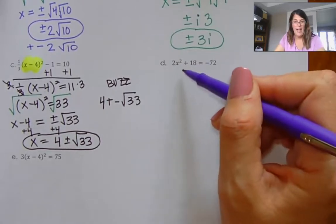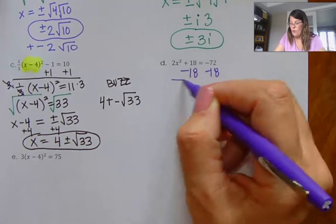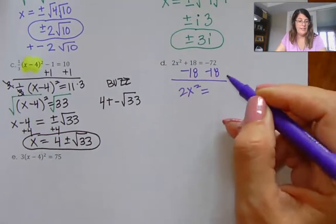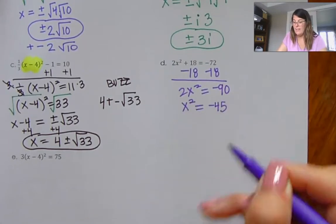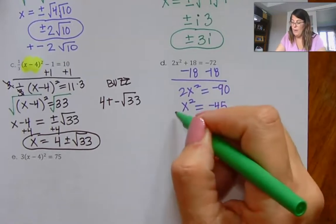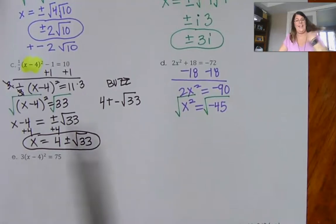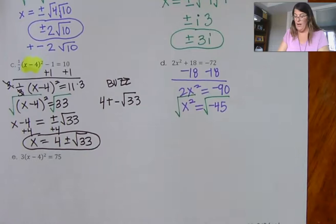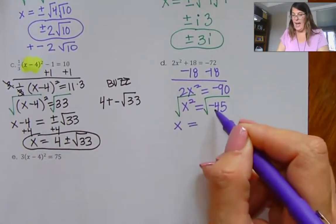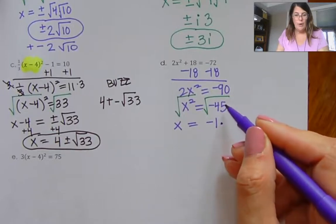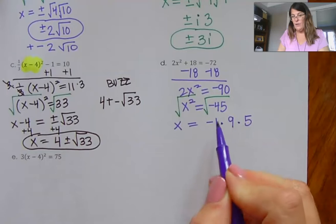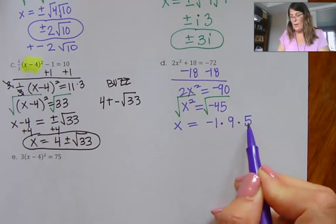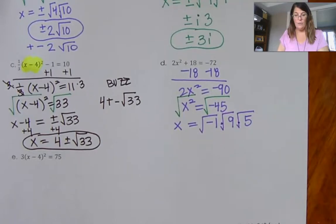For this next one, I want to get my x² all by itself. I'm going to move the 18 over: 2x² is equal to negative 90. Divide both sides by 2, and x² is equal to negative 45. Once I get the x² thing alone, I can take the square root. The square root of x² is x, and I know this is going to have a negative 1. There's a perfect square of 9 trapped in 45 — so negative 45 is negative 1 times 9 times 5. I can take the square root of each of those terms, and since I'm the one that took the square root, I have to have that plus or minus.